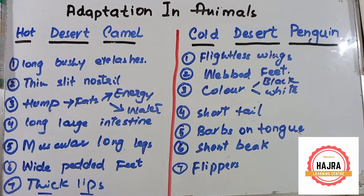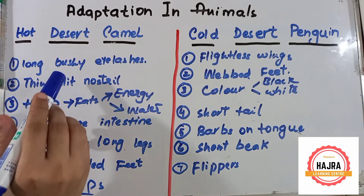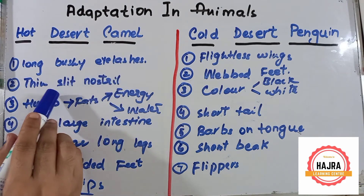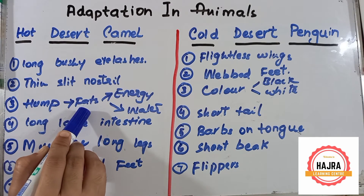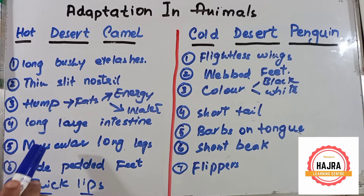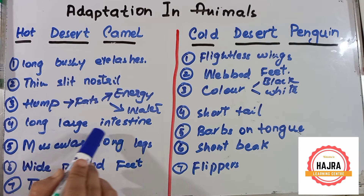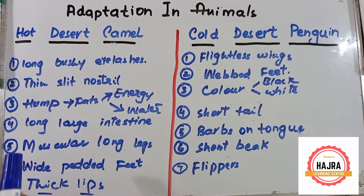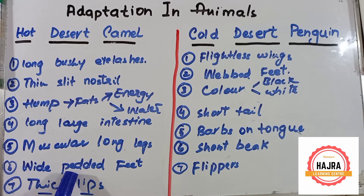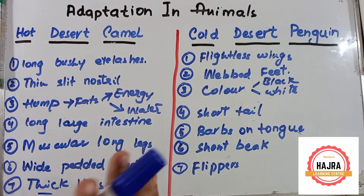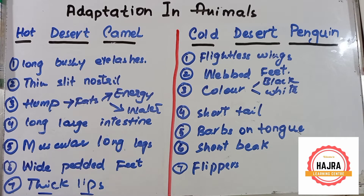Here we have learned about seven adaptations in the camel to survive in the hot desert: number one, long eyelashes; number two, thin slit nostrils; number three, a hump with stored fat that gives energy and water; number four, a long large intestine; number five, long muscular legs for walking and running on sand; number six, wide padded feet so the feet will not sink into the sand; and number seven, thick lips to eat prickly desert plants.